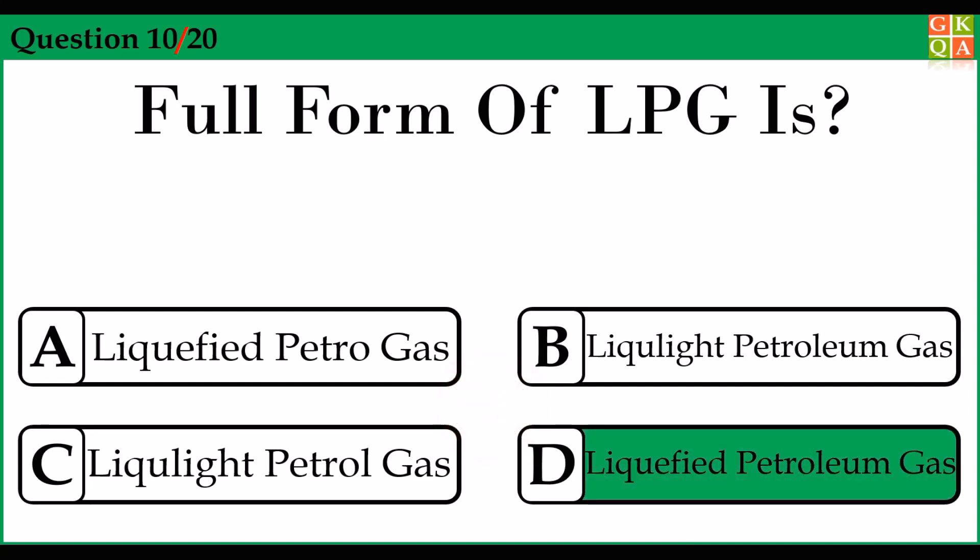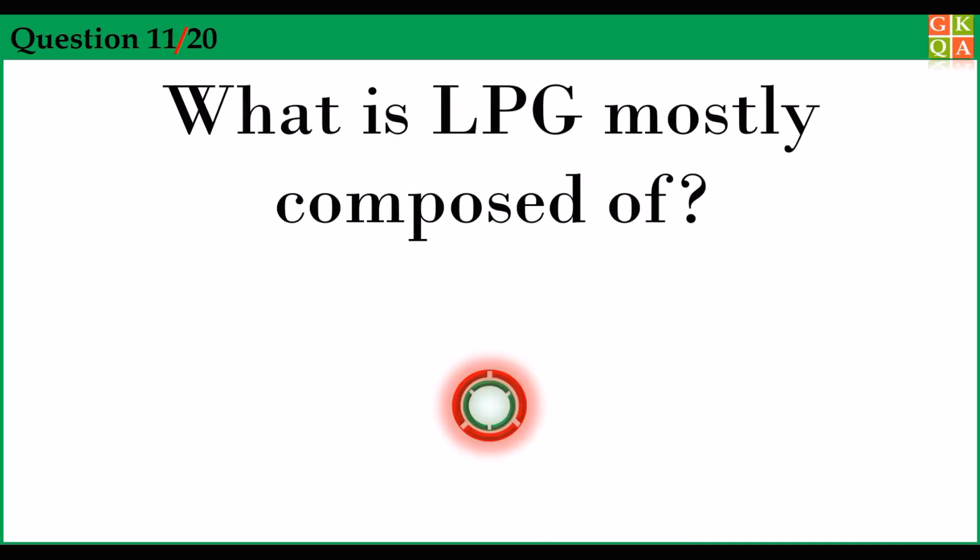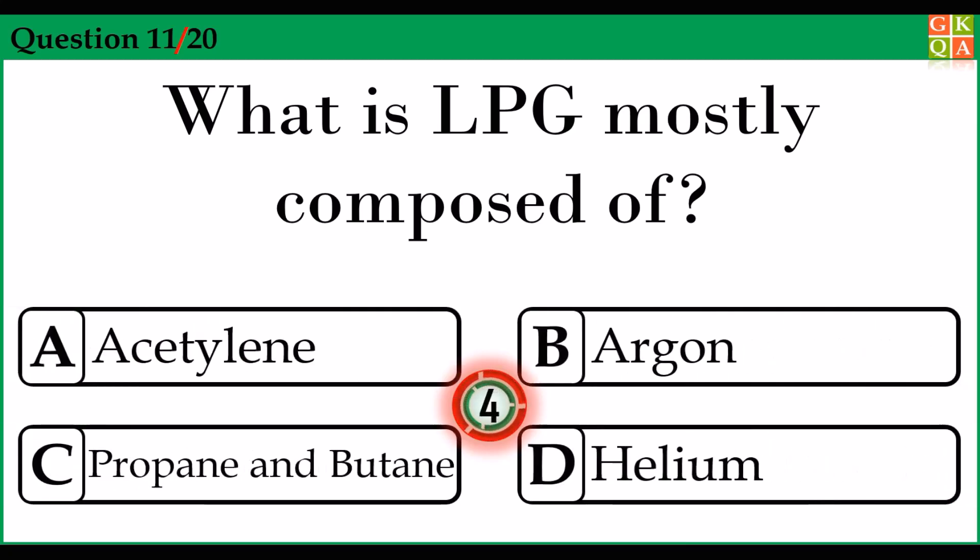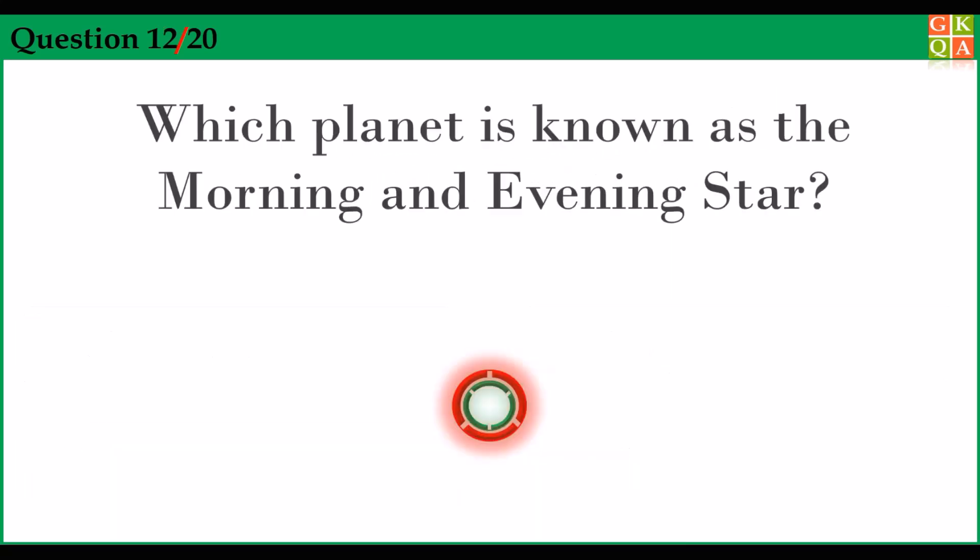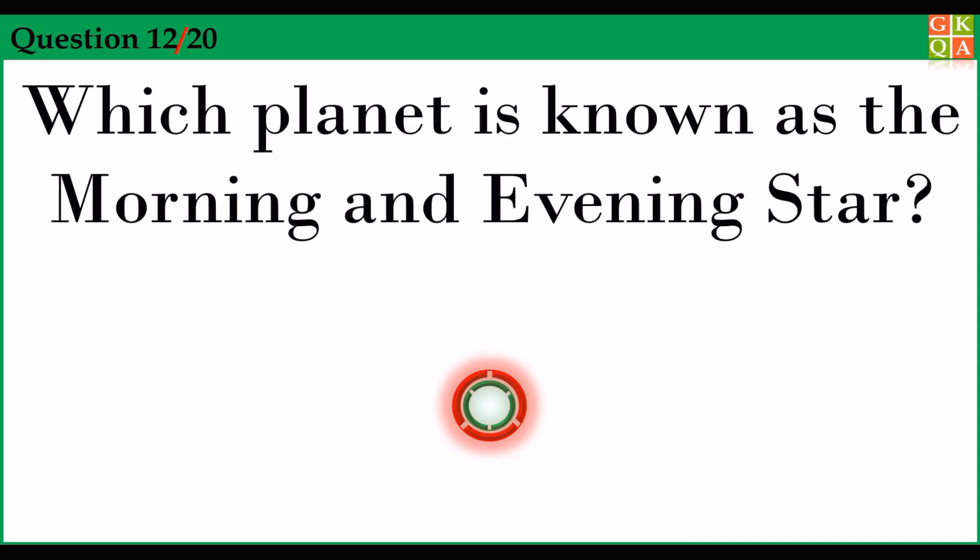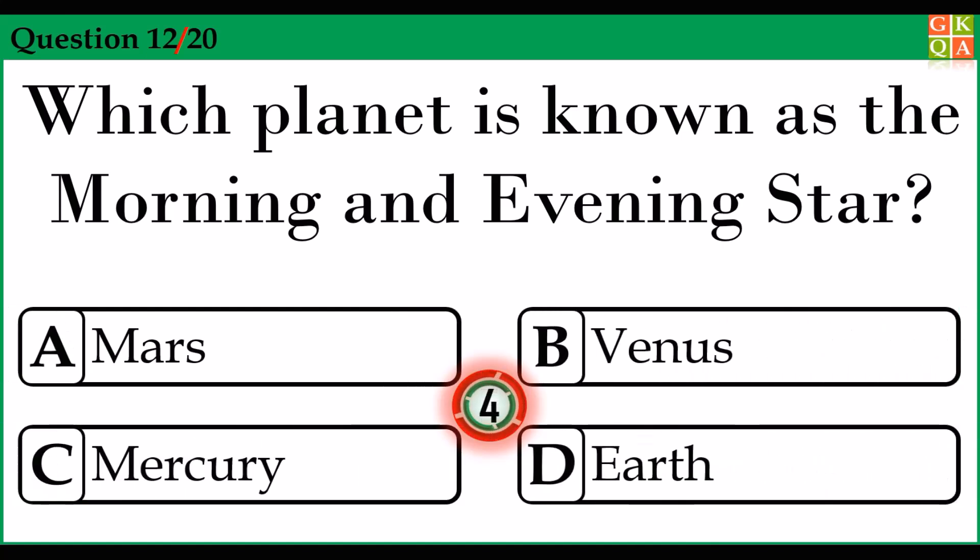Answer option D: Liquefied petroleum gas. What is LPG mostly composed of? Answer option C: Propane and butane. Which planet is known as the morning and evening star? Answer option B: Venus.